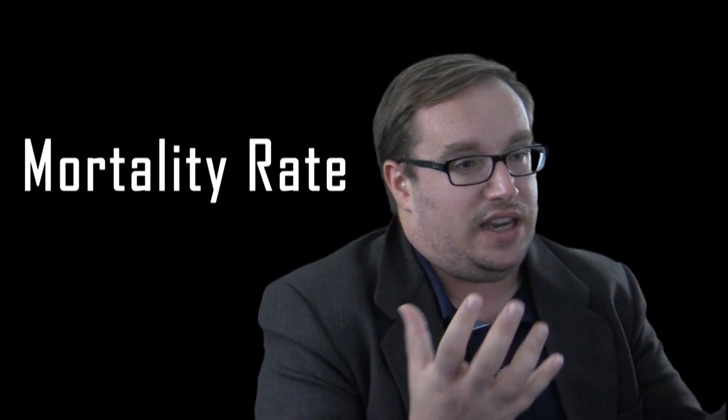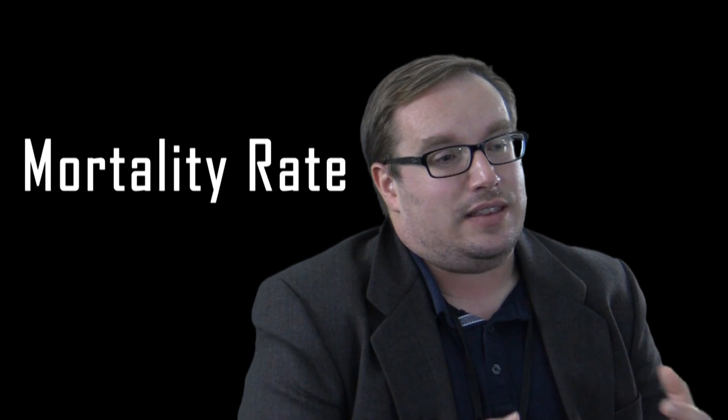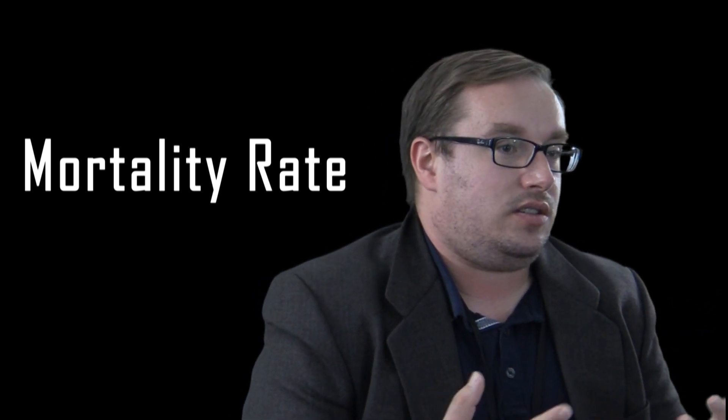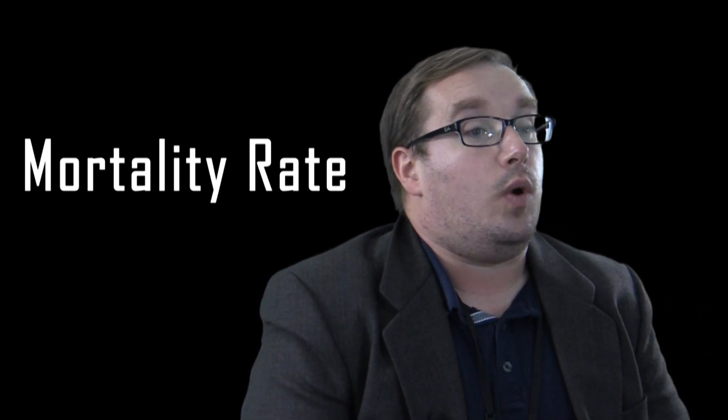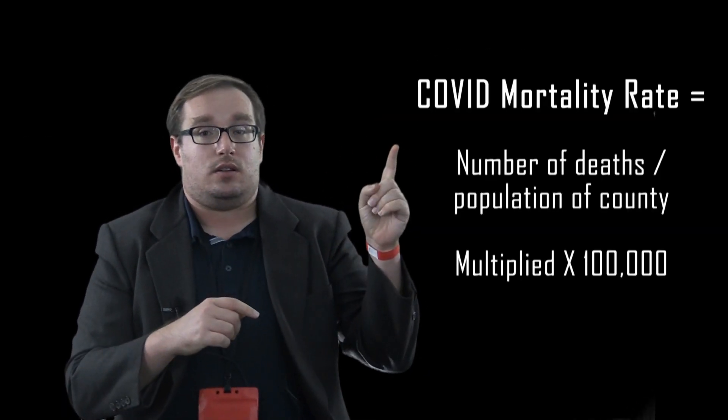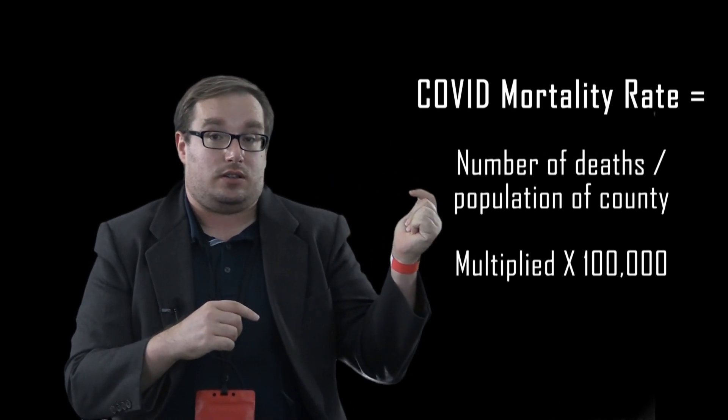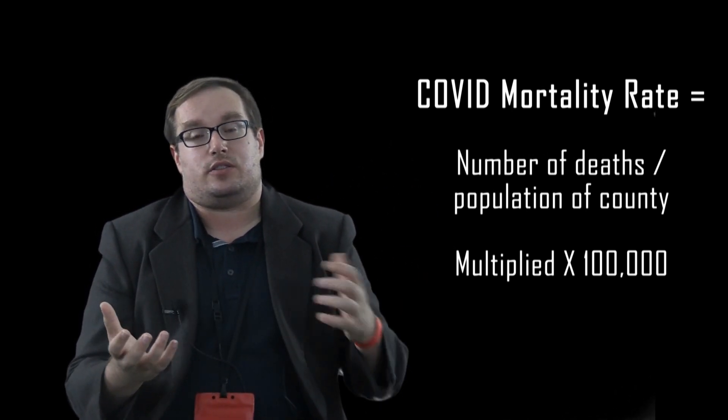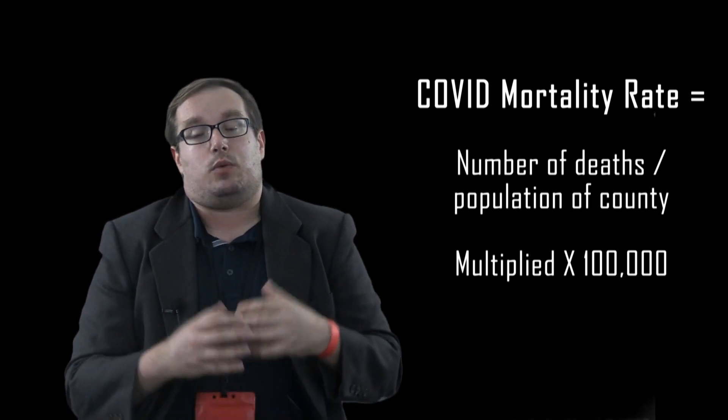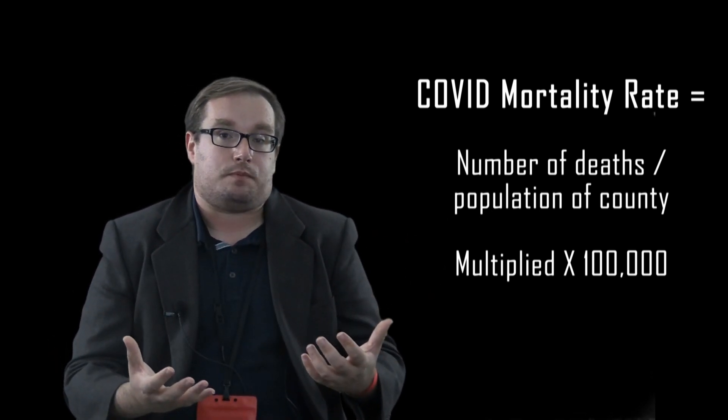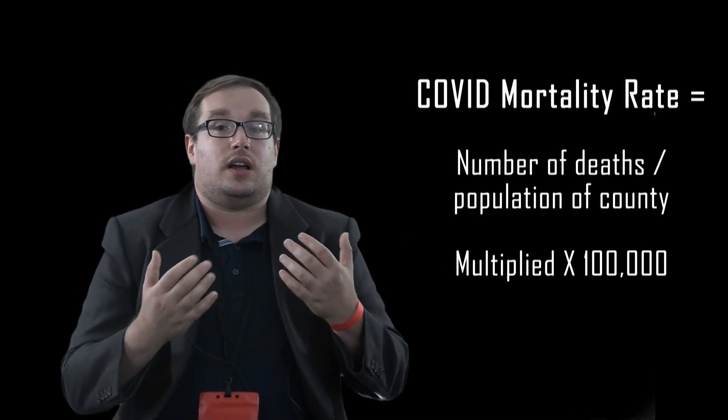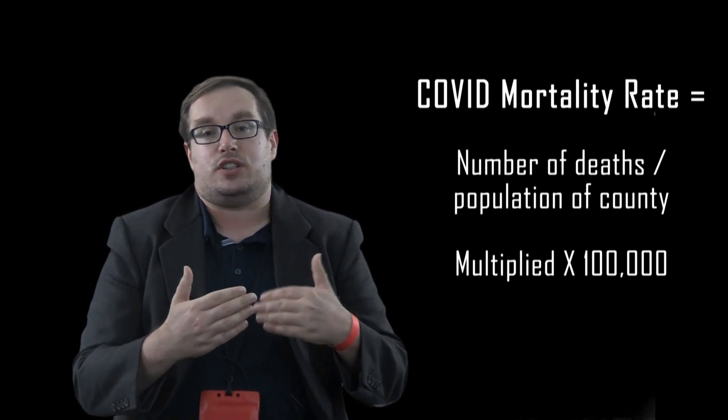So disease, car accidents, pianos falling at you from the sky—whatever. There's multiple ways you can calculate it. One is the mortality rate, and mortality rates are deaths over total population, and then we multiply that by a hundred thousand so we can compare groups. What we use mortality rates for more than anything else is either comparing diseases, which is more serious in the population, or comparing disease across populations.